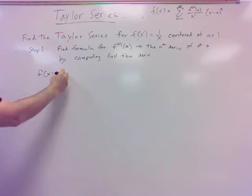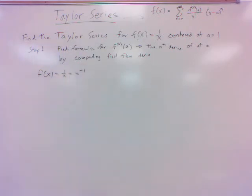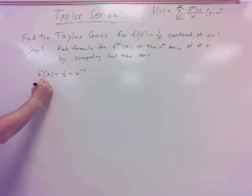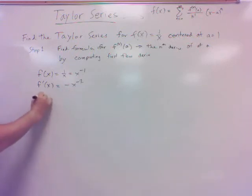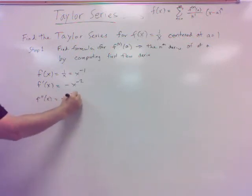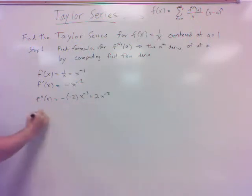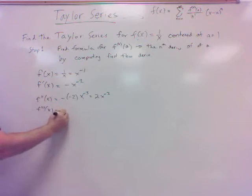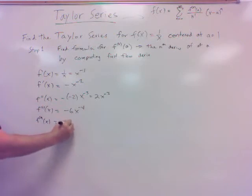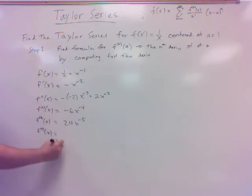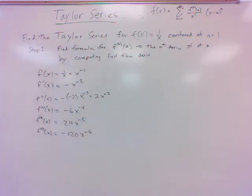So we've got f of x equals 1 over x, which is x to the minus 1 — that would be an easy way to compute it. f prime would be negative x to the minus 2. Second derivative would be negative times negative 2x to the minus 3, which is positive 2x to the minus 3. Third derivative would be negative 6x to the minus 4. Fourth derivative: 24x to the minus 5. Fifth derivative: negative 5 times 24 is negative 120, x to the minus 6.